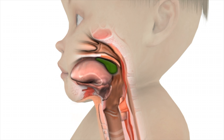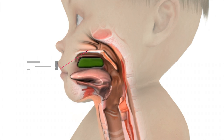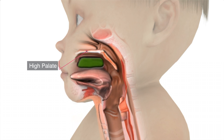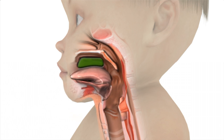However, when a high palate is present, the tongue has greater difficulty initiating the oral transit phase because the tongue is unable to raise up against the hard palate as well. As such, the food bolus is unable to effectively and efficiently move to the back of the mouth.